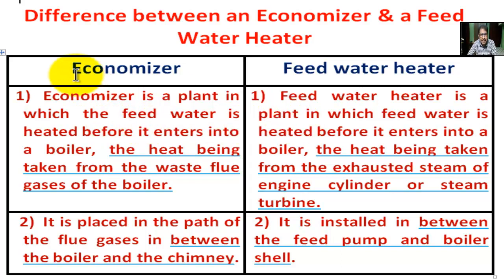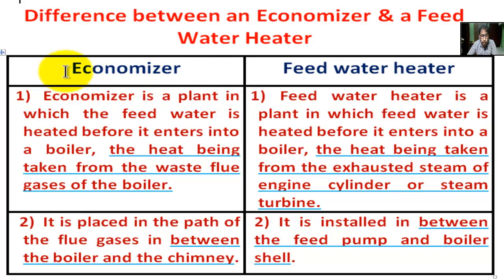The difference lies in the method of heating the feed water. In an economizer, the feed water is heated by the waste flue gases of the boiler. In a feed water heater, the water is heated by the steam from a steam turbine or steam engine.